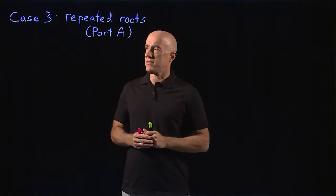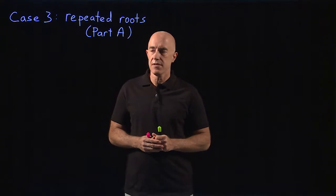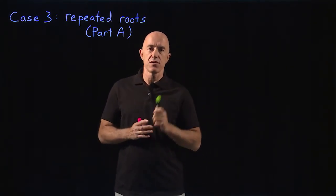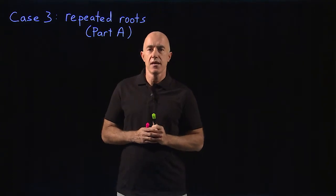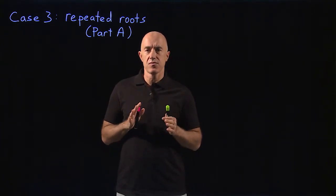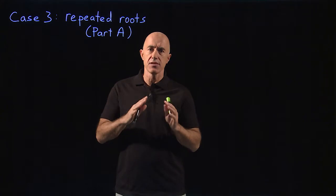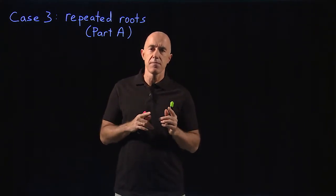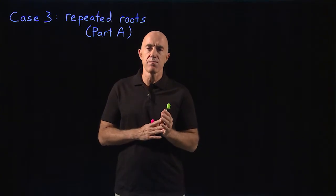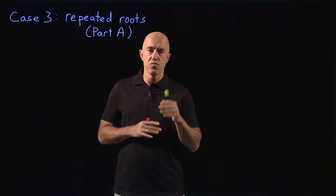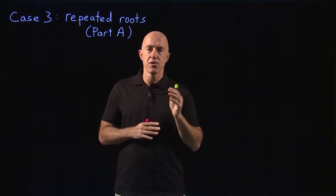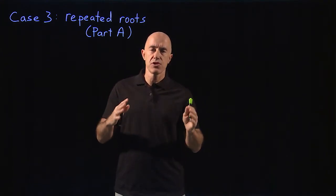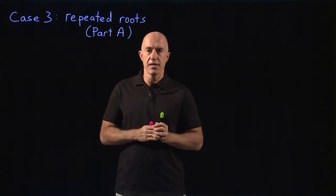So how are we going to find this missing second solution? The easiest and most intuitive way is to start with the case when you have two complex conjugate solutions, and see what happens when you take the limit as the imaginary part of the root of the characteristic equation goes to 0.